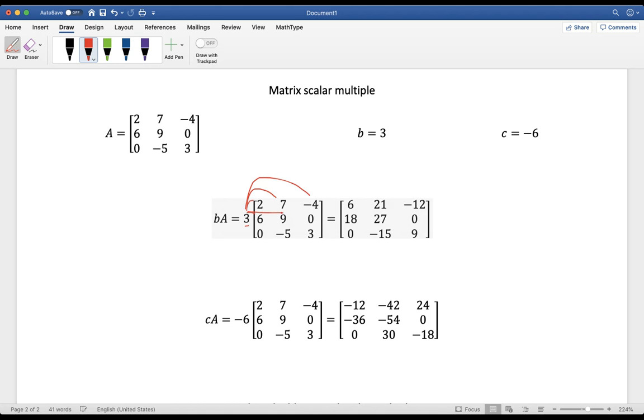If you notice, I have it sitting in front. I write it three times. And then all I do is I actually distribute it in to every single element in the matrix. So I'm going to multiply each of these by three. And if you notice, three times two is six, three times seven is 21, three times negative four is negative 12, three times six is 18, three times nine is 27, three times zero is zero, three times negative five is negative 15, and three times three is nine. So if you multiply a three by three matrix by a scalar, its solution will be a three by three matrix where everything is three times as big.